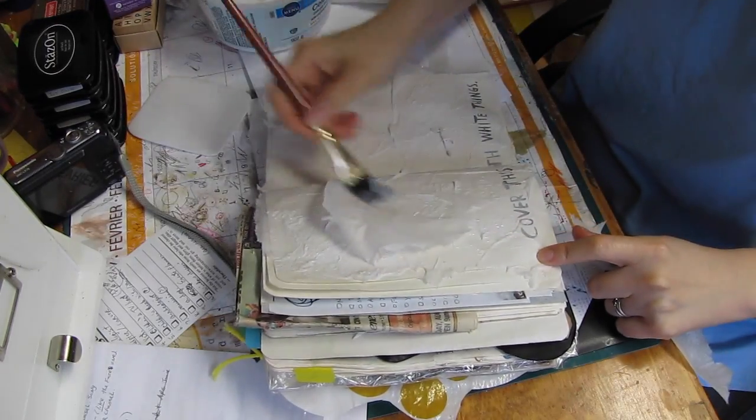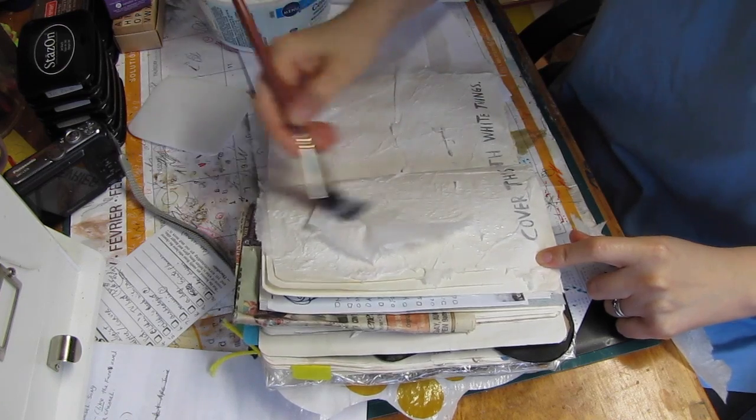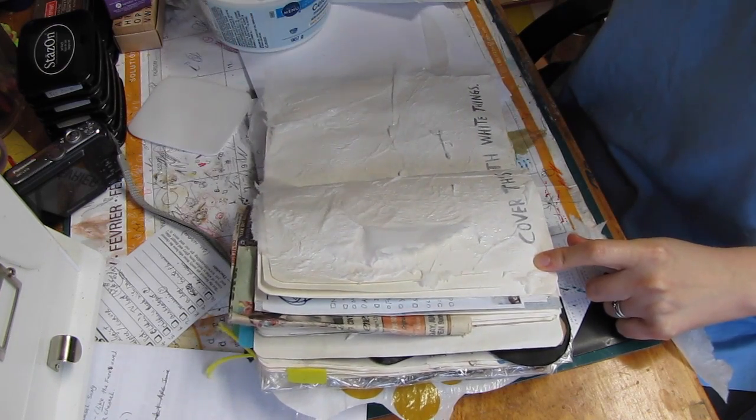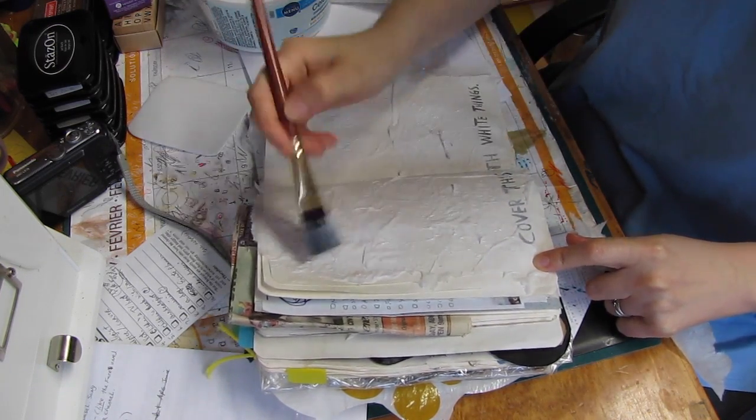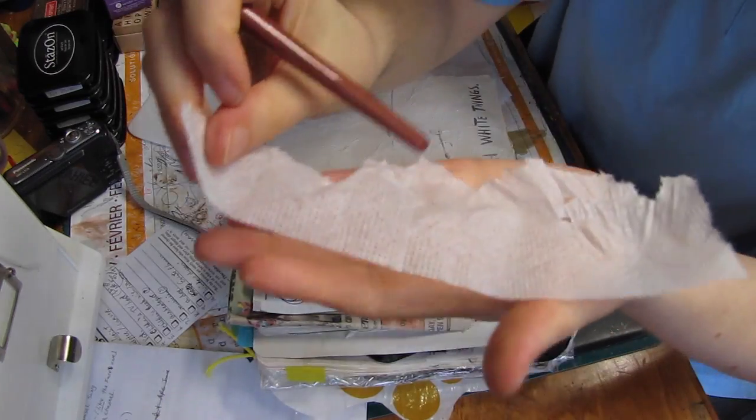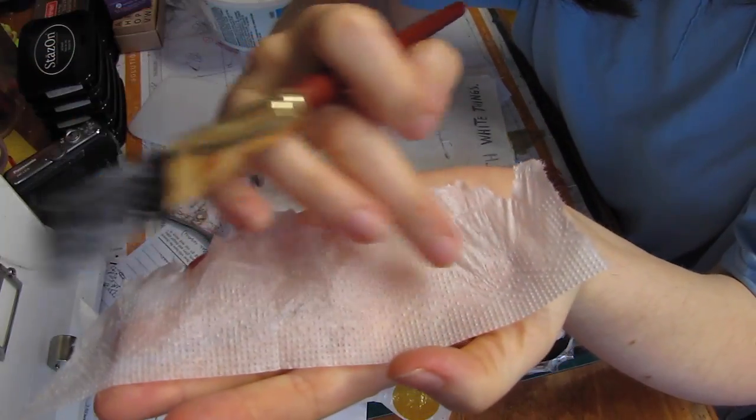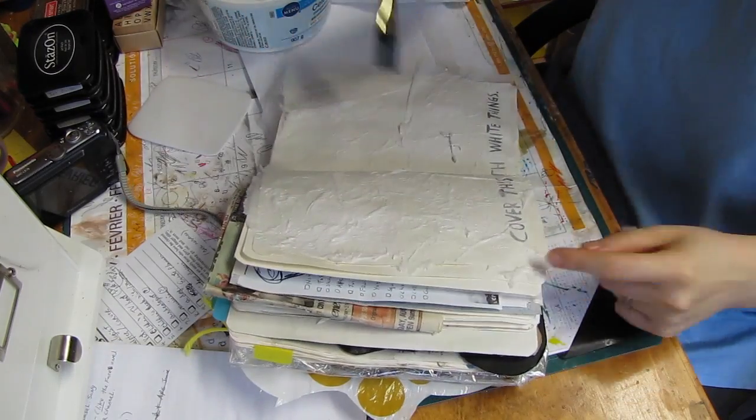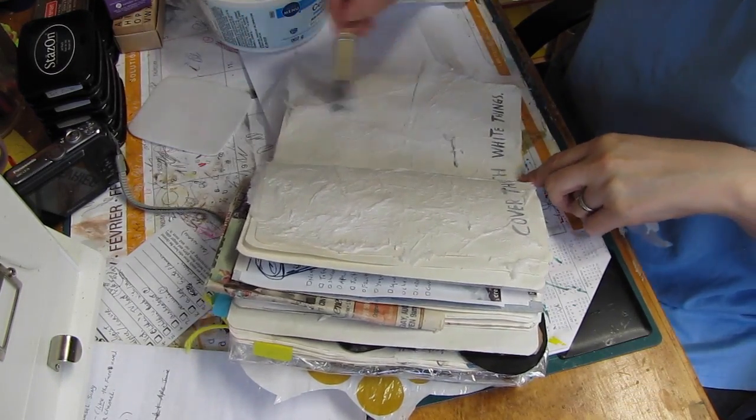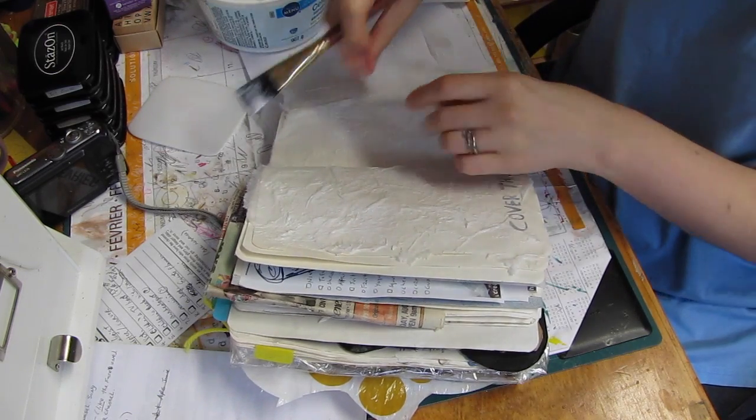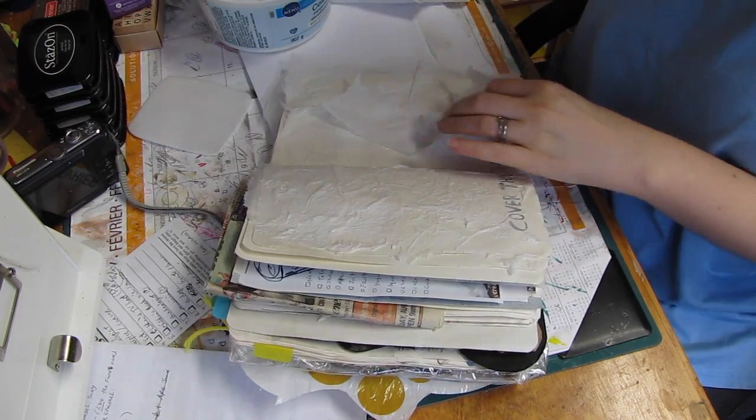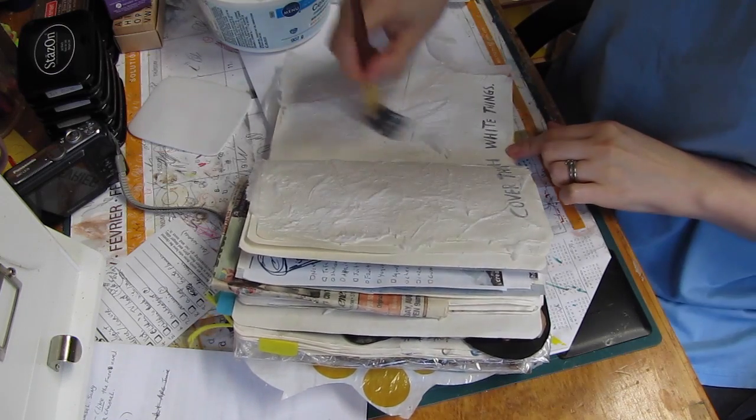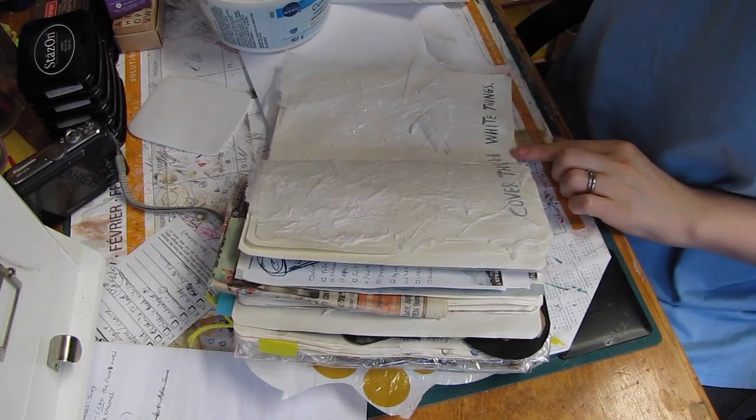But anyway, it's got some texture on this little piece. Yeah, the edges, you probably won't be able to see it, but there's texture, like little bumps. And as you can see, I'm not really doing a good job. I'm just putting it on there any which way. It is a wreck, this journal, after all.